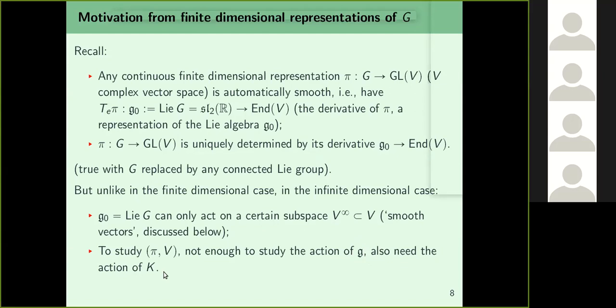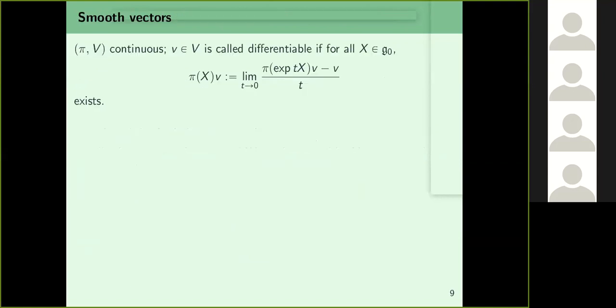Once you know what it means to differentiate once, you can define what it means to be smooth: for a smooth vector v and elements X1,...,Xn in the Lie algebra, you can define pi(X1)pi(X2)...pi(Xn)v, meaning you differentiate first by Xn, then Xn-1, and so on up to X1. We often write this simply as X1 X2 ... Xn acting on v. For those who know universal enveloping algebras, this is the action of X1⊗...⊗Xn ∈ UEA on v.